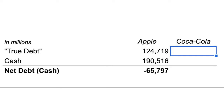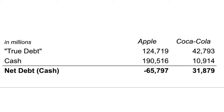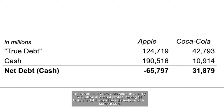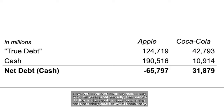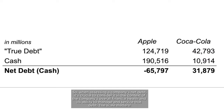Let's illustrate net debt using Coca-Cola. Coca-Cola holds $42,793 million in debt and has $10,914 million in cash, giving a net debt of $31,879 million. Is this large? It depends entirely on how much money the company generates. If Coca-Cola rakes in $10 billion in annual profits, having $1 billion in debt is relatively small. But if another company makes only $100 million in profit annually, that same $1 billion in debt could be crushing and push it toward bankruptcy. When assessing net debt, always consider it in the context of the company's overall financial health.